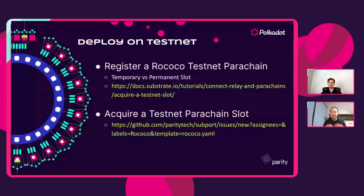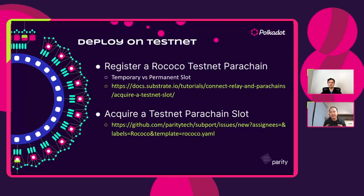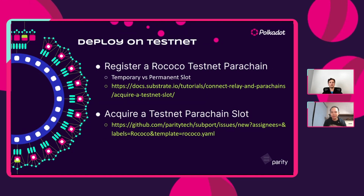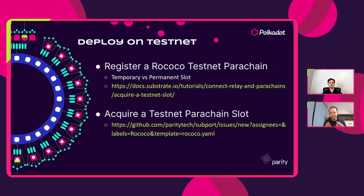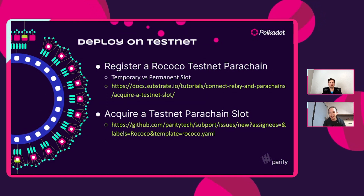Once you have all that, the next key step is to take that prototype on a basic node template and turn it into a parachain node template, putting all the components of the runtime into the parachain node template. At this stage, you would test it on a relay chain — you may have already done that on a local relay chain. There is a tutorial on docs.substrate.io directly for that, but how do you actually get onto Rococo?